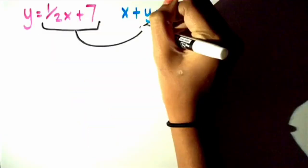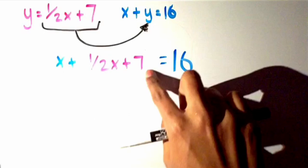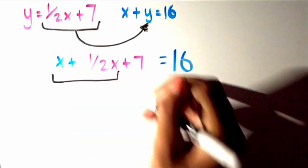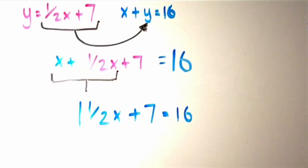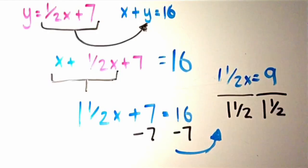Since we already have an equation for Y, let's just substitute it into the other equation. This is okay to do because X and Y each represent the same number. Next, we combine the X values to get 1 and a half X. Then we subtract 7 from both sides, which leaves us with 1 and a half X equals 9.